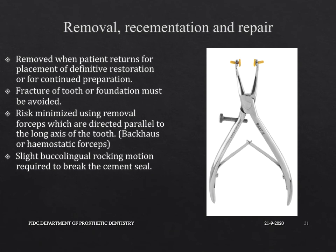Regarding removal, re-cementation, and repair: the provisional restoration needs to be removed when the patient returns for placement of a definitive restoration or for continued preparation. The fracture of the tooth or the foundation must be avoided. Risk is minimized by using removal forceps directed parallel to the long axis of the tooth. A slight buccolingual rocking motion is required to break the cement seal in cases where the temporary crown needs to be removed.